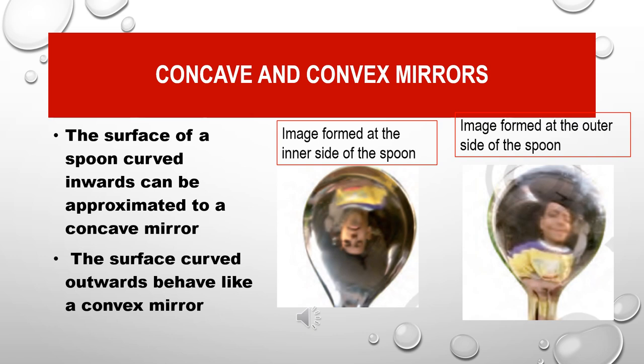Here we are studying about Concave and Convex Mirrors. These mirrors can be compared with a spoon. Take a spoon and look at the image formed at the inner side of the spoon, and also at the outer side. The surface of the spoon curved inwards can be approximated to a concave mirror, and the surface curved outwards behaves like a convex mirror.